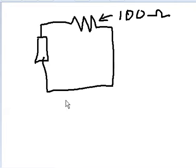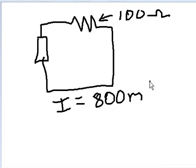That's all we know, and we also know one other thing: the current is equal to 800 milliamps. So R equals 100 ohms, current I equals 800 milliamps. Question: what is the power that is dissipated over that resistor?